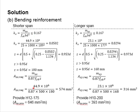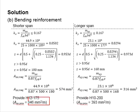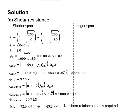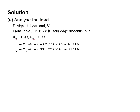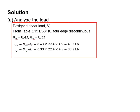Provide reinforcement of H12 at 175 mm spacing in the shorter span and H10 at 200 mm for the longer span. The amount of reinforcement bar provided needs to be greater than the required amount. Next, check the shear resistance of the member.